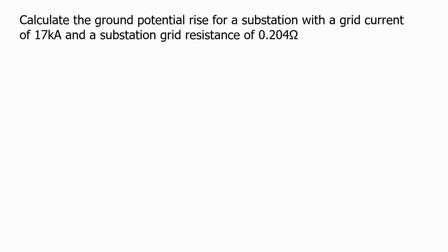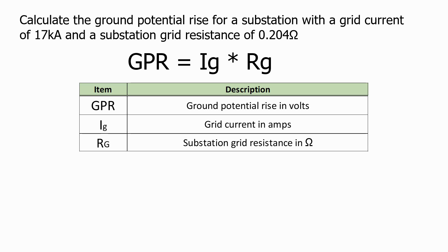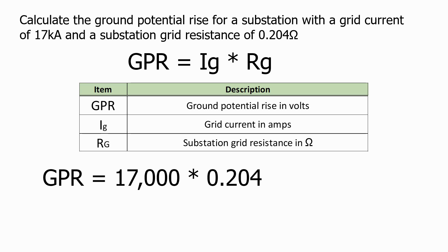Let's do a worked example. Calculate the ground potential rise for a substation with a grid current of 17kA and a substation grid resistance of 0.204 ohms. Using our formula, the ground potential rise equals the grid current multiplied by the substation grid resistance. Putting the figures in, we have a GPR for this substation of 3468 volts.